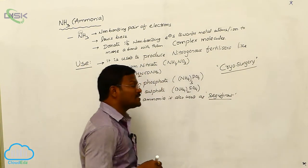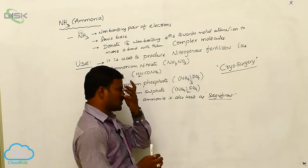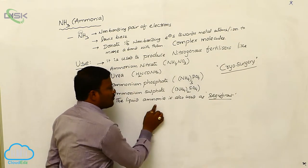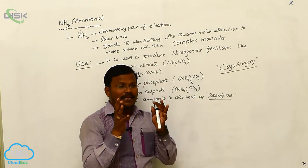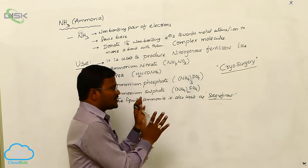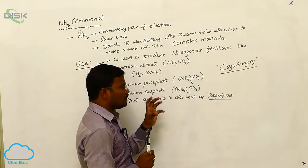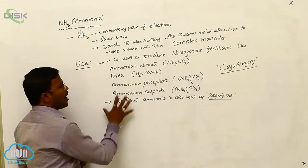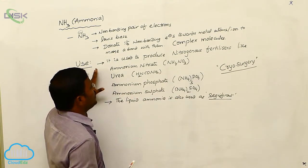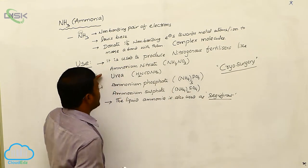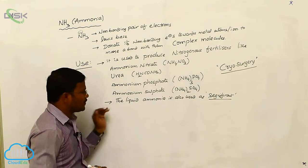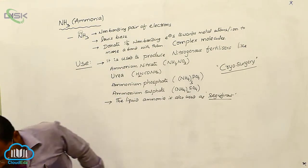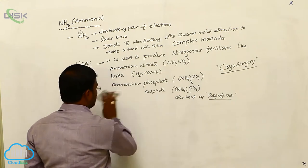Super cooling conditions of minus degree centigrade are required to perform some surgeries; such surgeries are called cryosurgeries. At the time of cryosurgery we can use liquid ammonia as a refrigerant or dinitrogen. Ammonia is also used to produce nitrogenous fertilizers like ammonium nitrate, urea, ammonium phosphate, and ammonium sulfate, whereas liquid ammonia is used as a refrigerant.